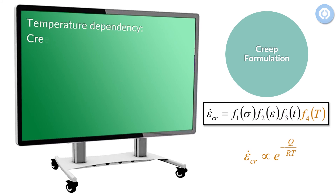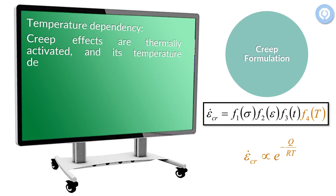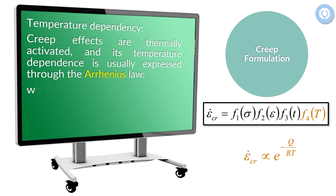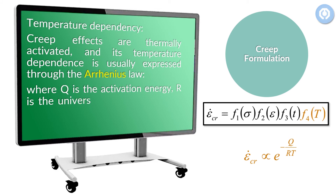Regarding temperature dependency: creep effects are thermally activated, and their temperature dependence is usually expressed through the Arrhenius law, where Q is the activation energy, R is the universal gas constant, and T is the absolute temperature.